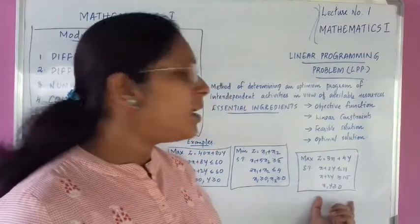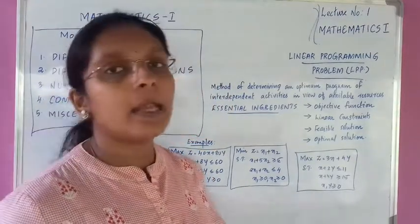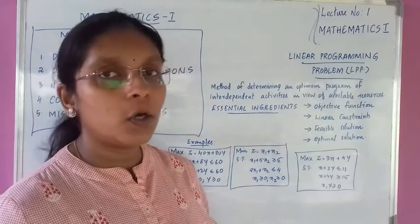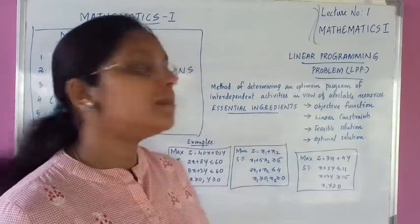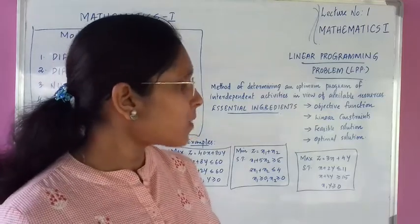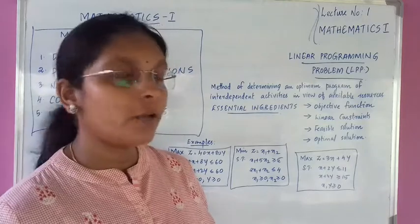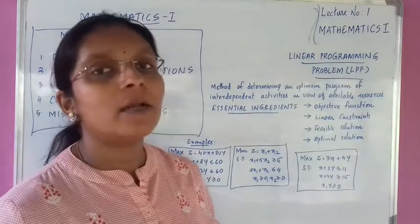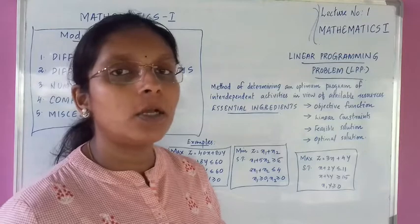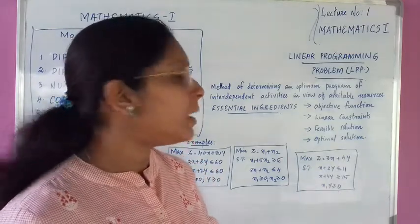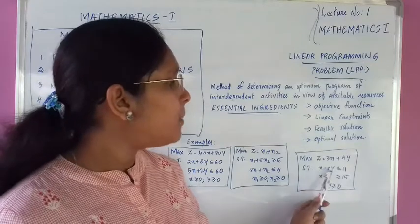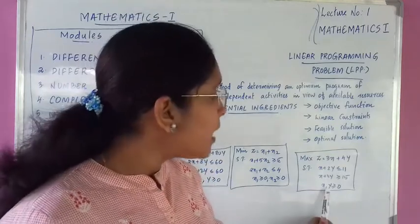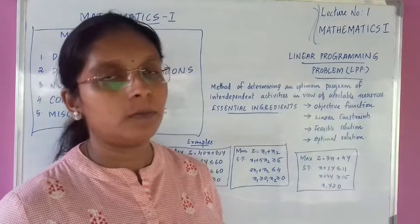Example 3: In this example, identify the objective functions and linear constraints. Maximize Z = 3x + 4y, subject to the constraints x + 2y ≤ 11, x + 3y ≥ 15, and x, y ≥ 0. The objective function is Z = 3x + 4y. The linear constraints are x + 2y ≤ 11, x + 3y ≥ 15, and the non-negative constraints are x, y ≥ 0.